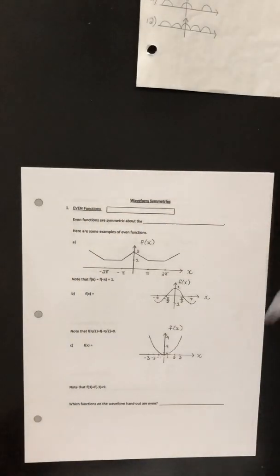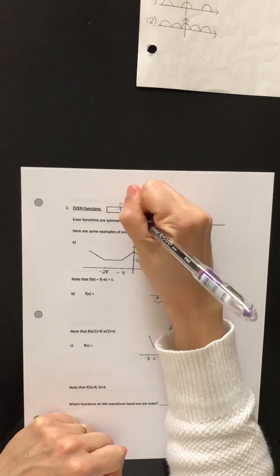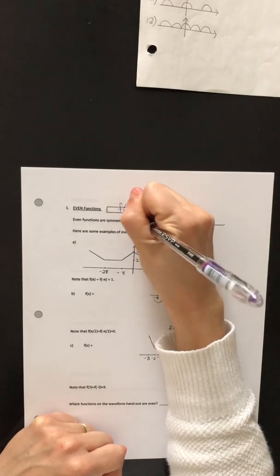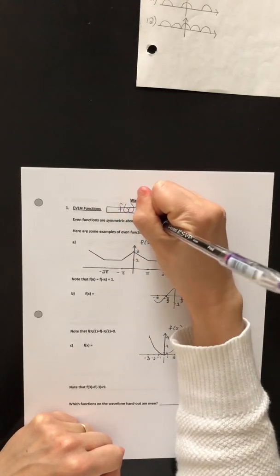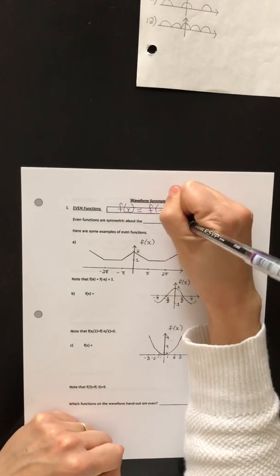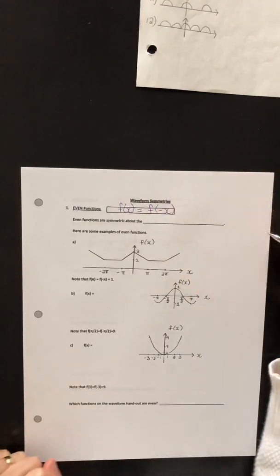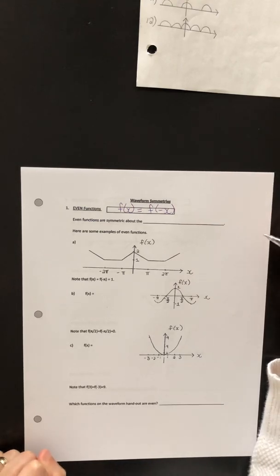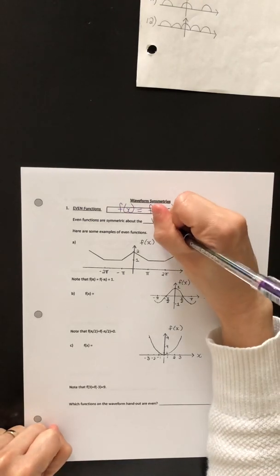The first kind of symmetry is an even symmetry. If a function is even, it will be true that f at x is equal to f at negative x.